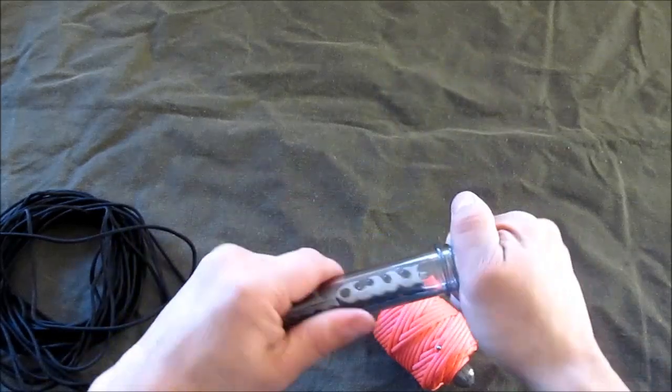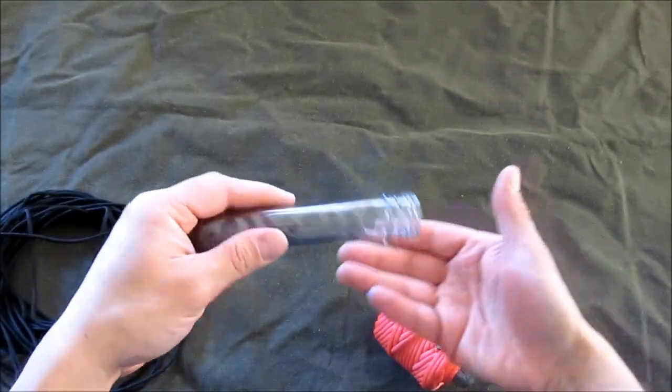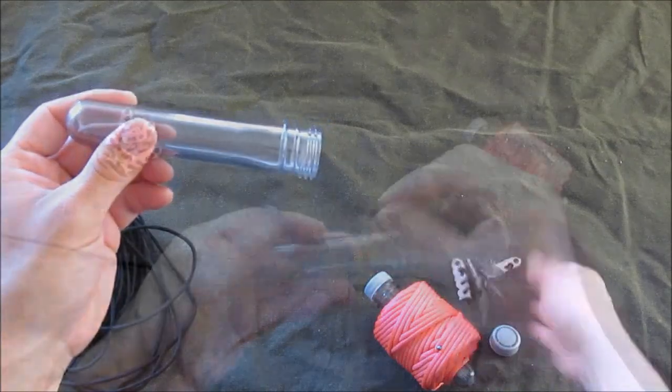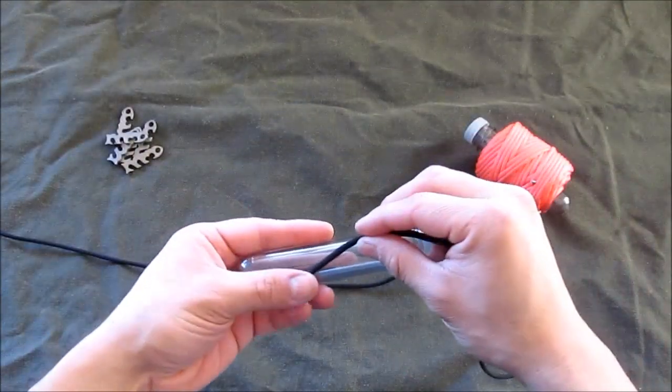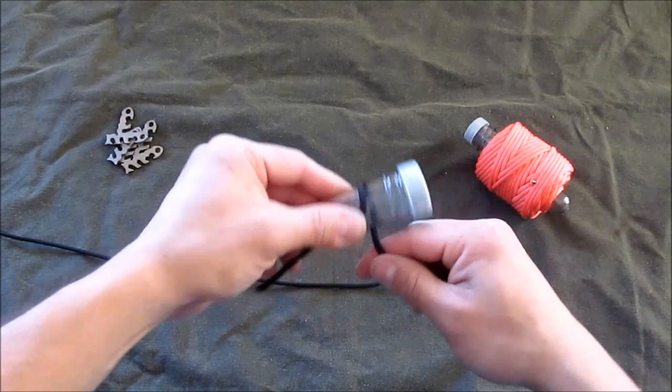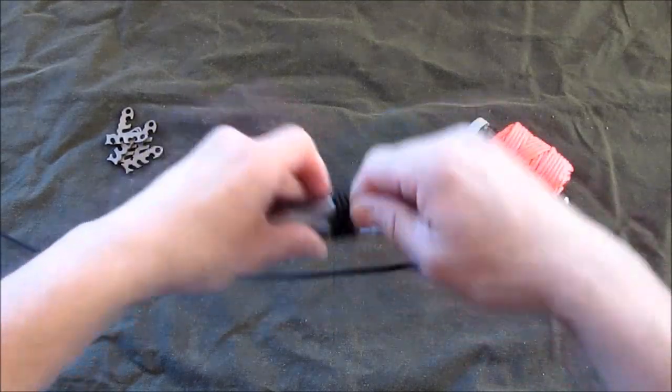You'll start by taking your paracord and you'll wrap it around your core all the way down.